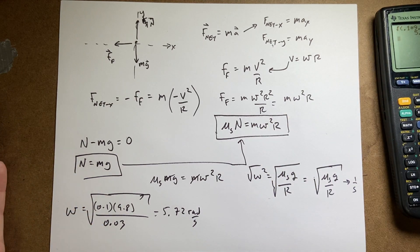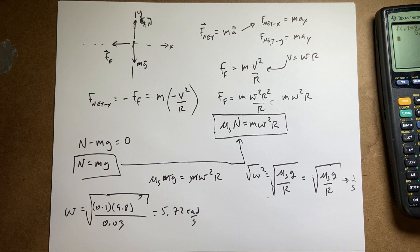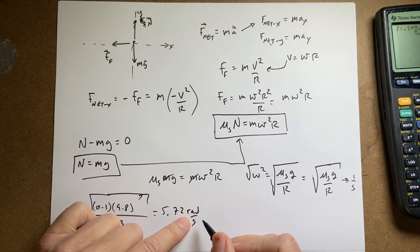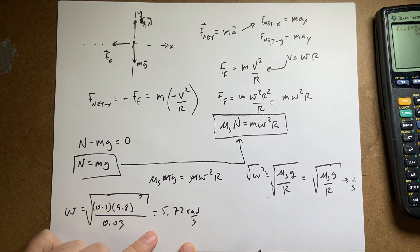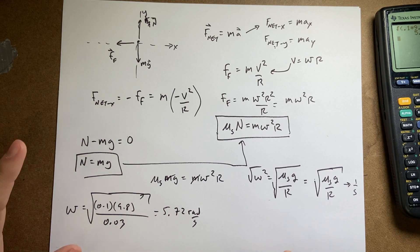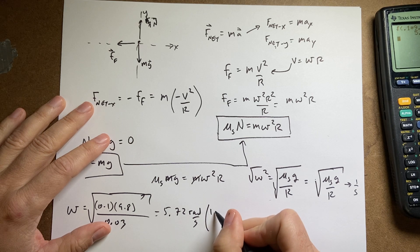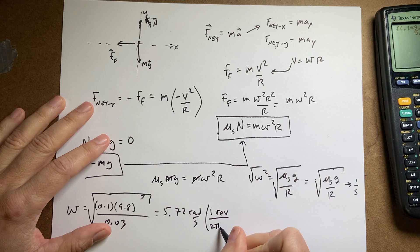Now what if you want this answer in revolutions per second? So in this case we're going to have to do a unit conversion. To convert units, I need to just multiply by 1. If I multiply this number by 1, I don't change it. So that's fine. But in this case, what if I multiply it by the unit of 1 revolution divided by 2 pi radians?